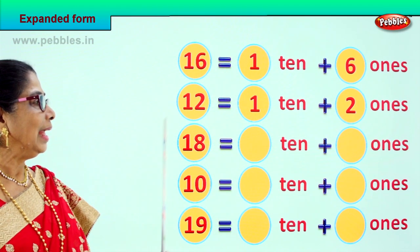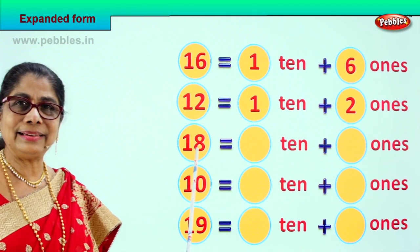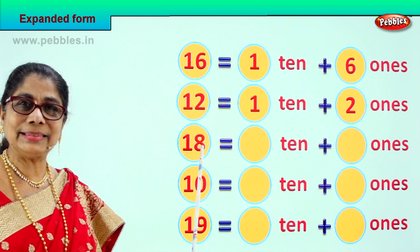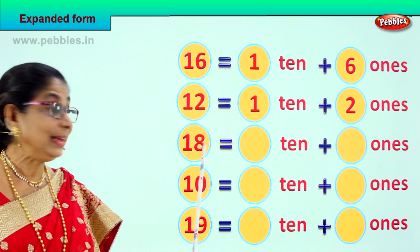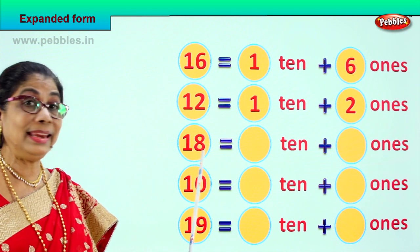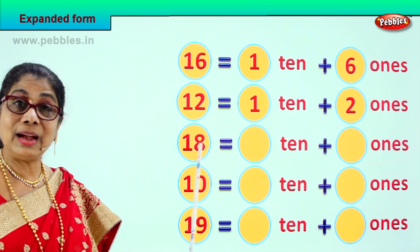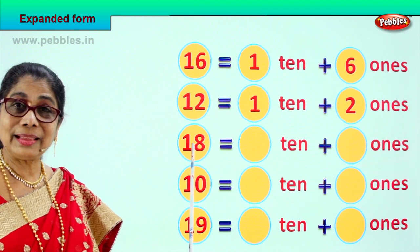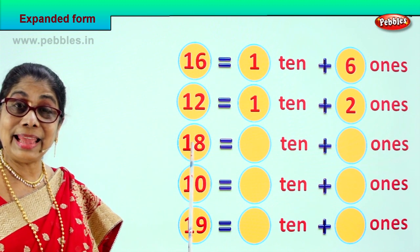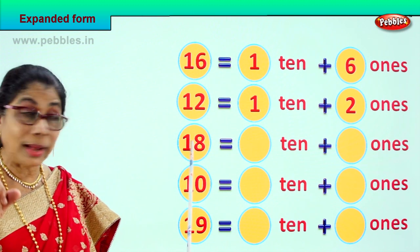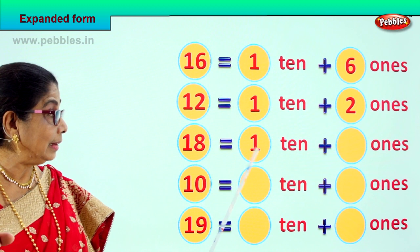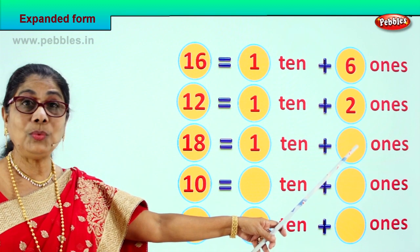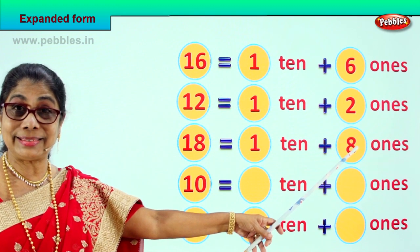And here, what number is this? 18. How many ones? How many tens? 18 has 1 ten and 8 ones.